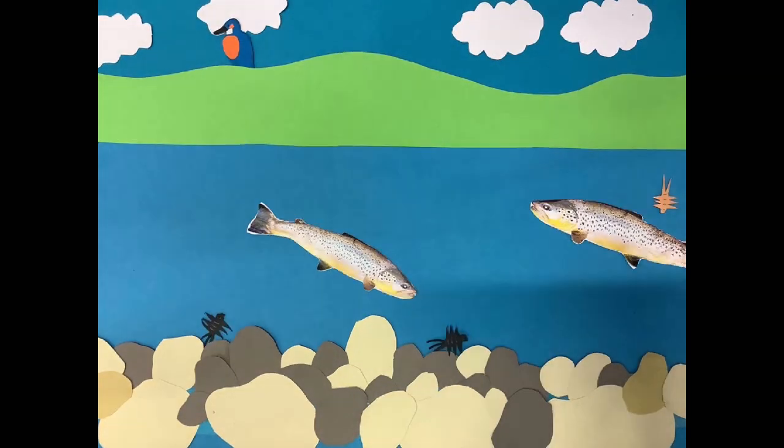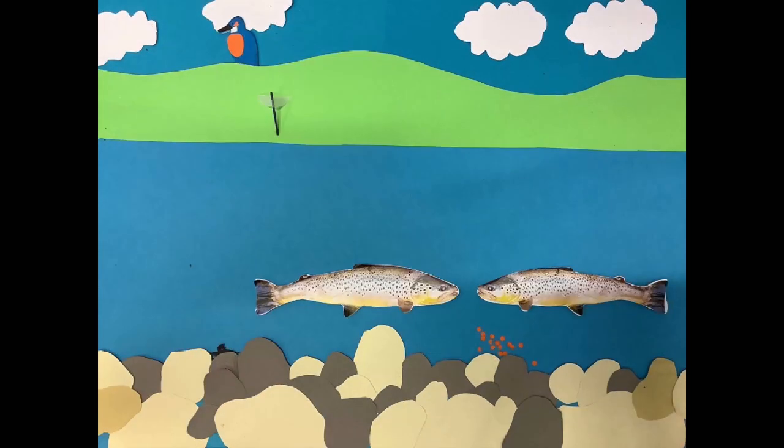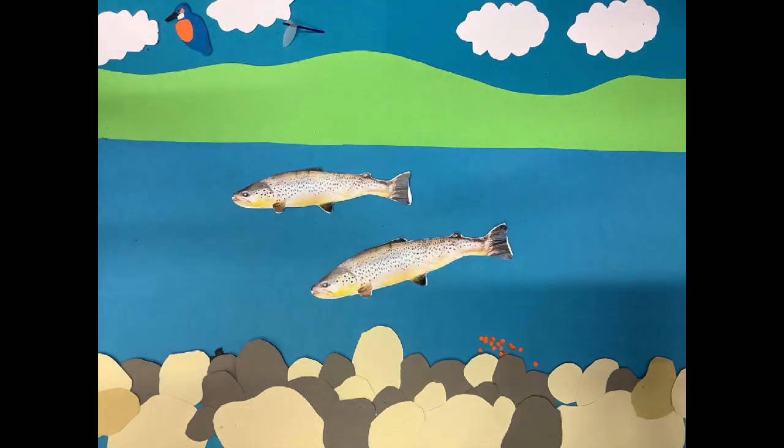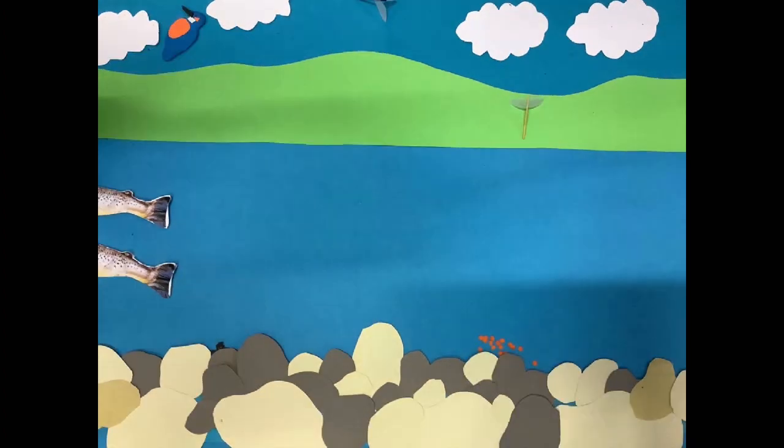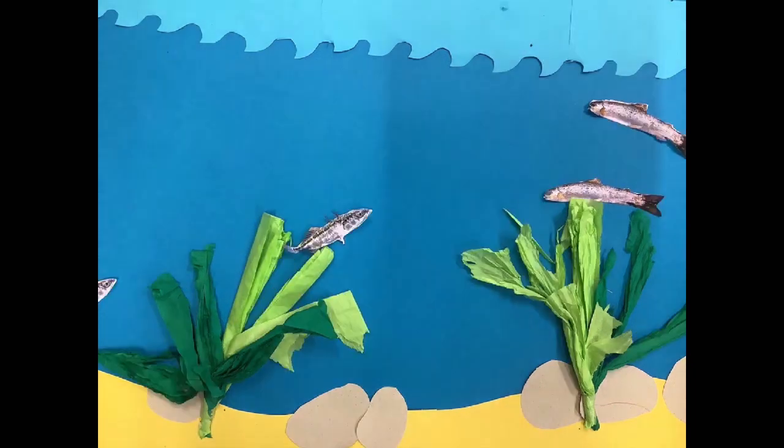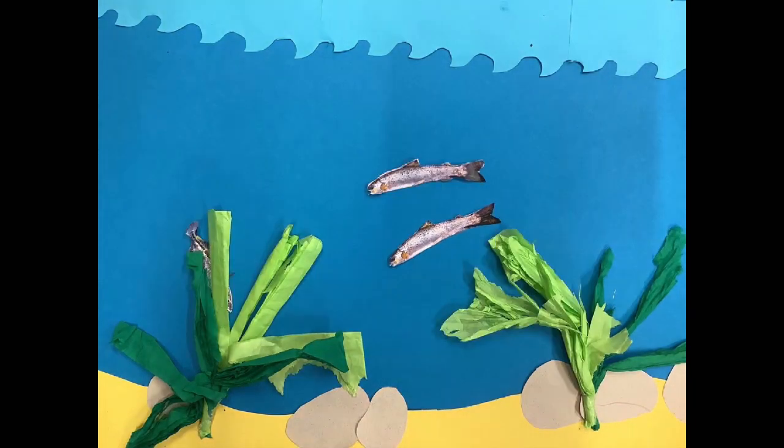Adult brown trout tend to feed on invertebrates their whole life. Brown trout can live for about 20 years. Some parr become silver and become smolt, then grow to be sea trout.